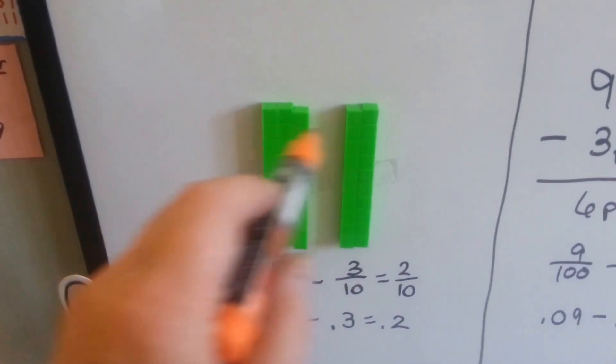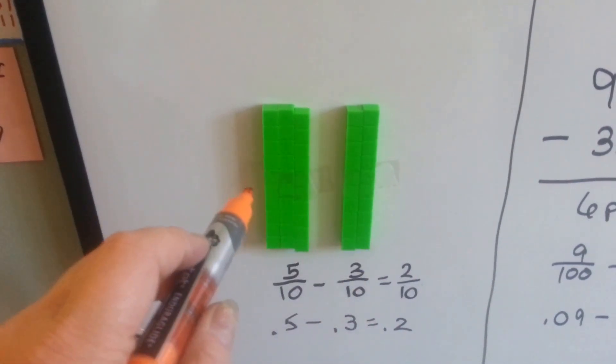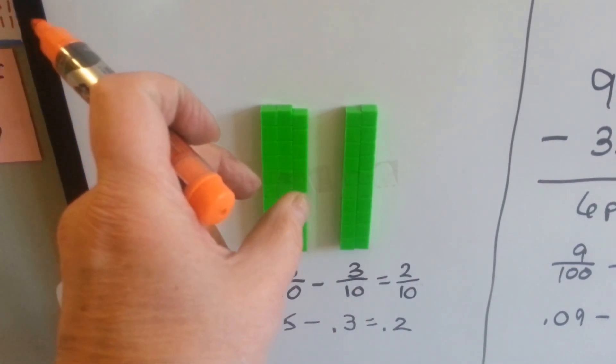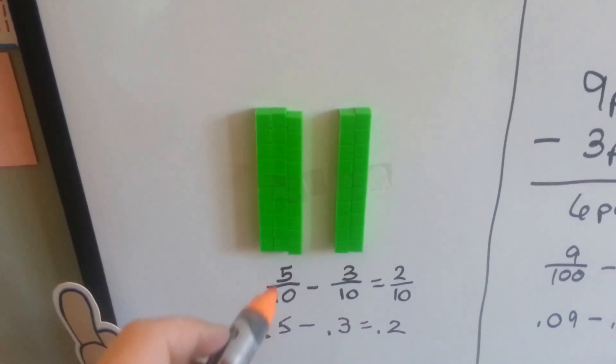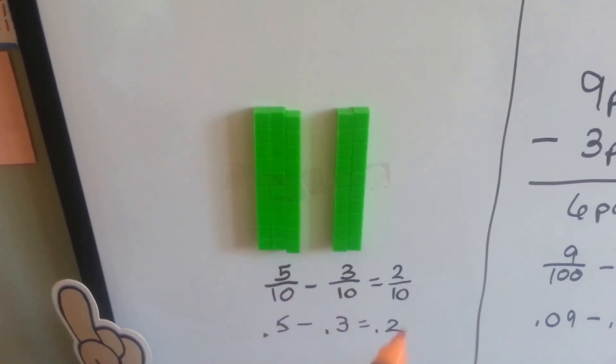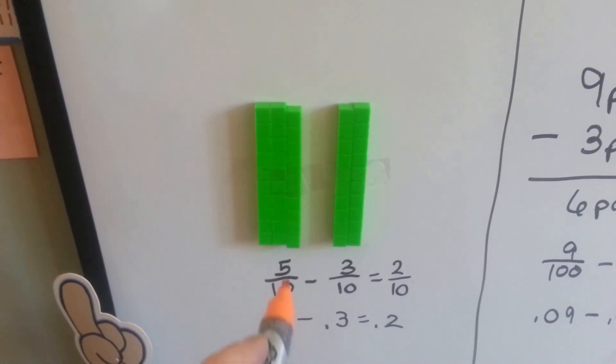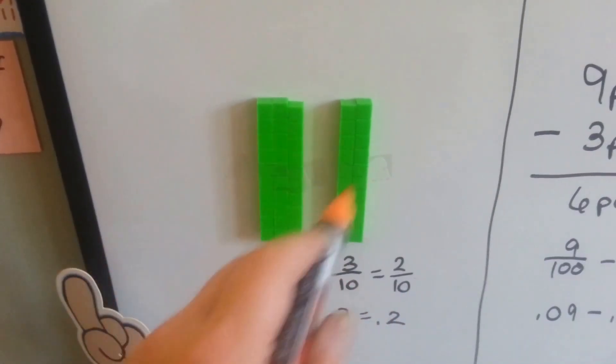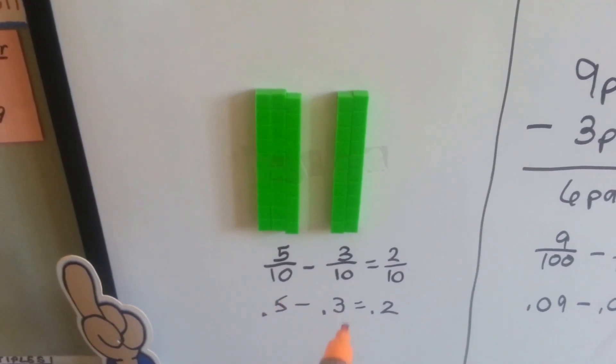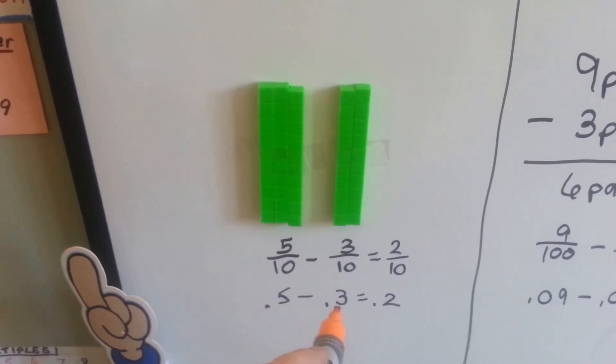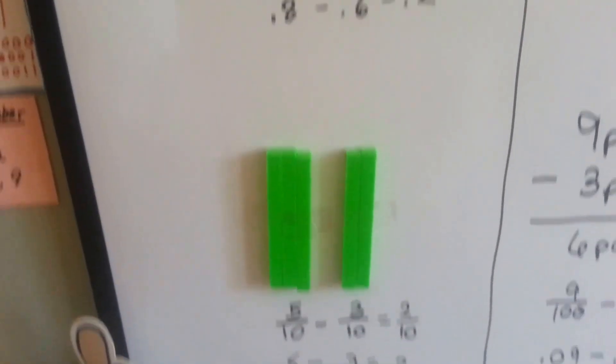If I had five of them, so I had five tenths, and I took three away, then that would just leave two. Five tenths minus three tenths is two tenths. See how the denominator is just staying the same because we're still dealing with tenths? So point five minus point three equals point two.